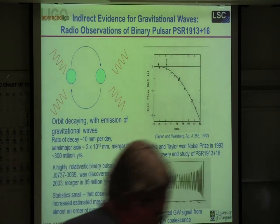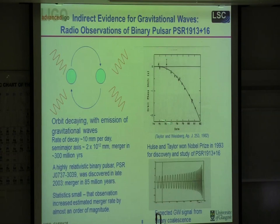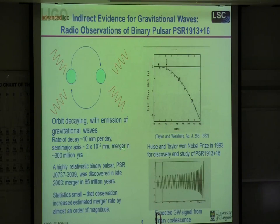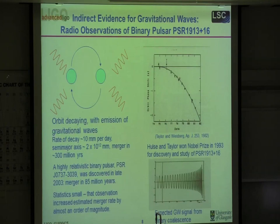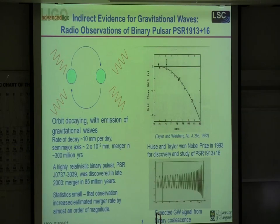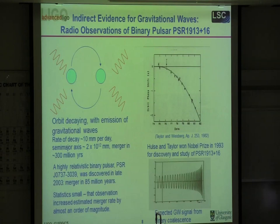Those binary pulsar waves are at very low frequency so we can't detect them directly, but for other binary systems we'd see a chirp signal: as the two objects spiral closer and speed up, the frequency rises, and they finally coalesce in a burst. That characteristic shape lets us use matched filter techniques to look for these signals against a background of noise.